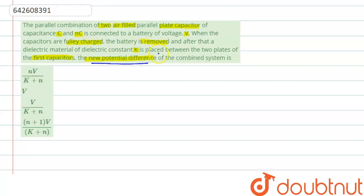So in this question, we have to find out the new potential difference when the battery is disconnected and the dielectric material of constant k is placed between the two plates of the first capacitor.